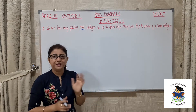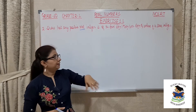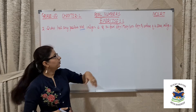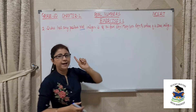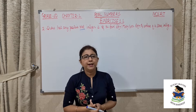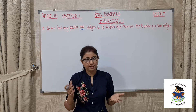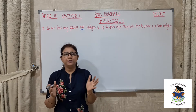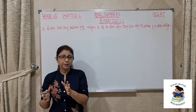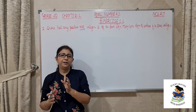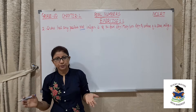This topic is also covered in our introduction video. Whenever we need to prove certain things using Euclid's division algorithm, we will take a number as B. Because when we apply Euclid's division algorithm on any two numbers A and B, it can be written as A equals BQ plus R, where Q is the quotient, R is the remainder, and the range of R is from 0 to B.